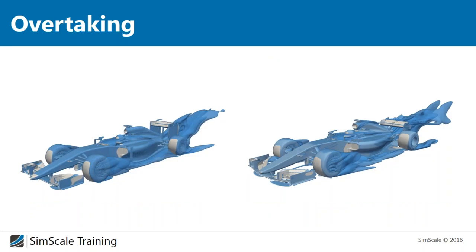Finally, looking at iso-contours of total pressure, you get an appreciation for the flow around the car — you can see the wakes of the tires and the wake behind the car. The wake on the new car is more confined and lower. The interaction with the rear diffuser appears to be stronger. With the new car's wake sitting much lower, if a following car enters into this wake, it will lose a lot of performance. This gives a good understanding of why overtaking is becoming more difficult.